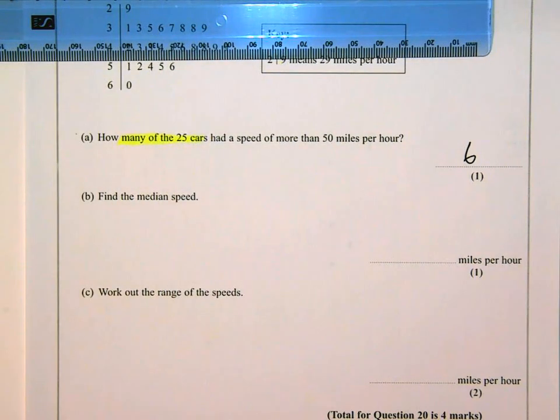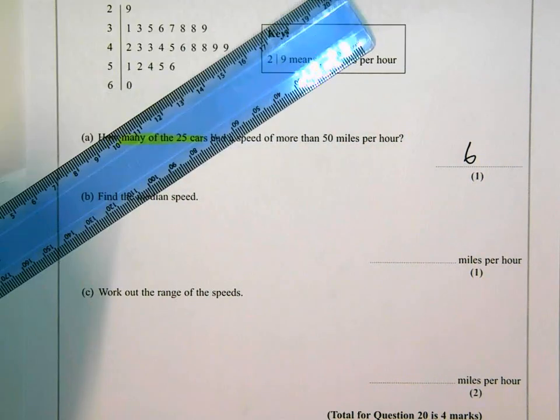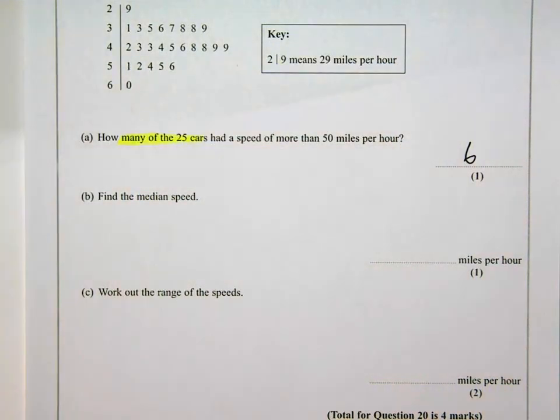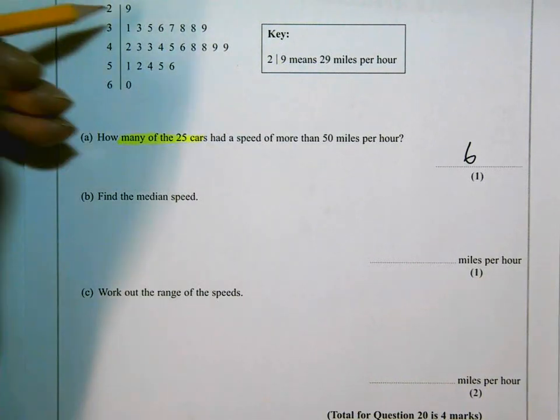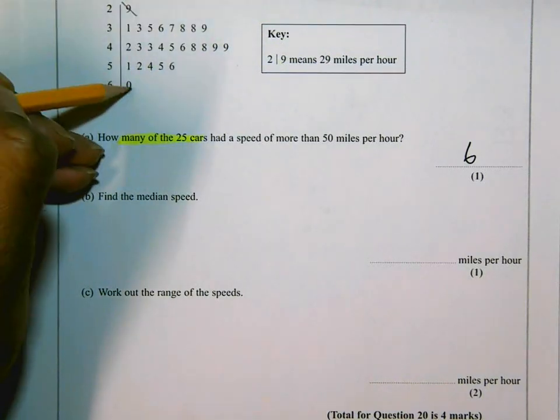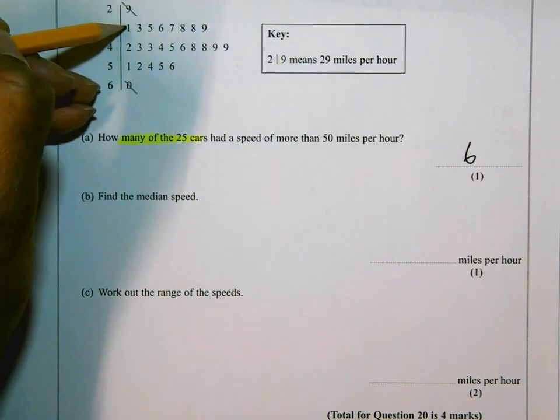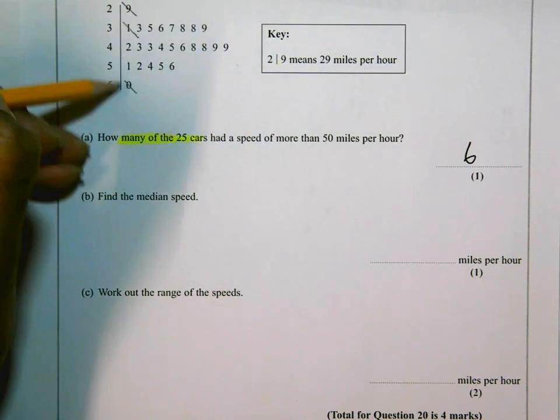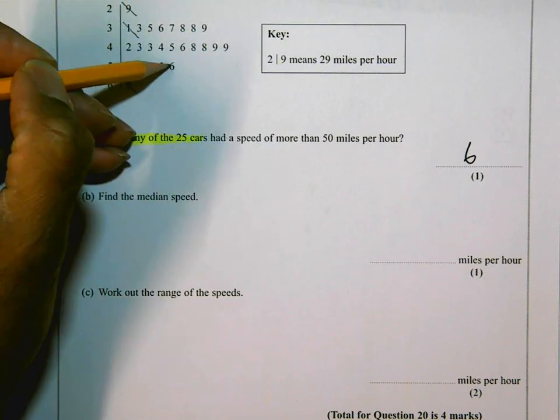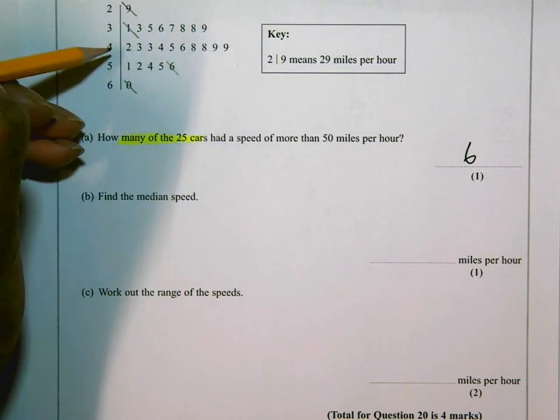Find the median speed. They love this type of question. With stem and leaf diagrams they love you working out or finding the median. And there are several ways to do this. However, I'm going to use the cancelling method which I think a lot of people do use. I'm going to cancel the lowest with the highest and then work my way down. But I need to take care. If that's the lowest then the next lowest is 31. If that's the highest then the next highest is 56.